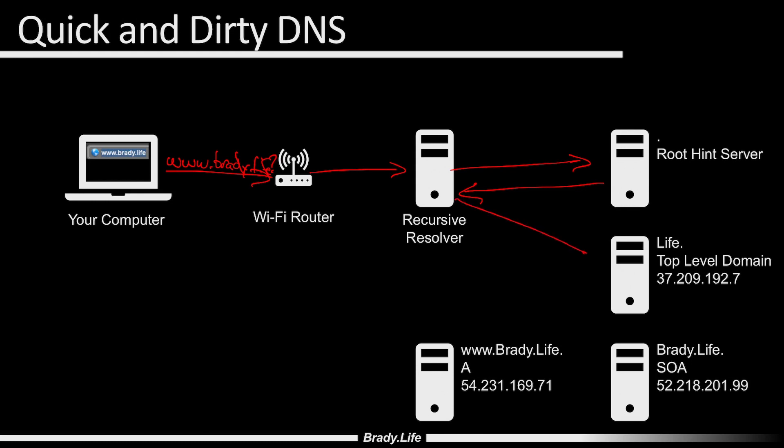Then it's going to send a request to .life: hey, who is Brady? And the top-level domain — because my domain is registered with them, with donuts.domains — it'll respond back: hey, the start of authority for brady.life is 52.218.201.99. And this is an AWS server, because I have them as my start of authority hosting the DNS records for my domain.